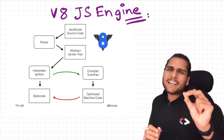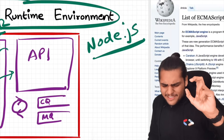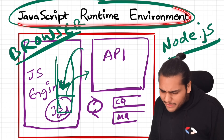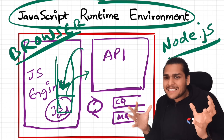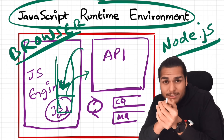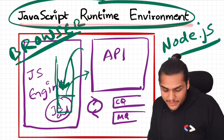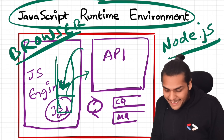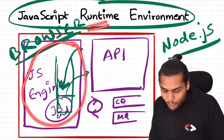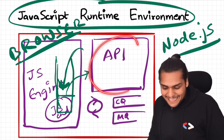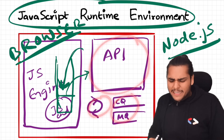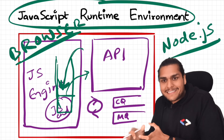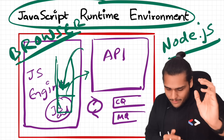Before we end, let's quickly revise everything. We have the JavaScript runtime environment — whenever you execute any JavaScript code, it needs a container with everything required to run it. The browser has a runtime environment, Node.js has a JavaScript runtime environment, and at the heart of it is the JavaScript engine. It also has access to APIs, callback queues, event loop, and more — different runtime environments can have different things inside them.